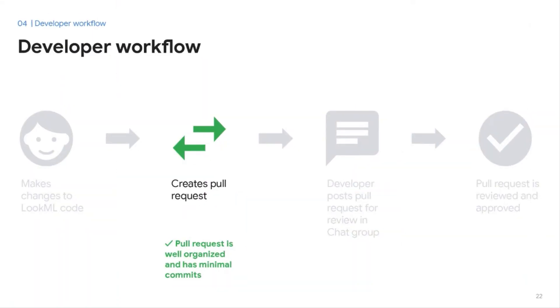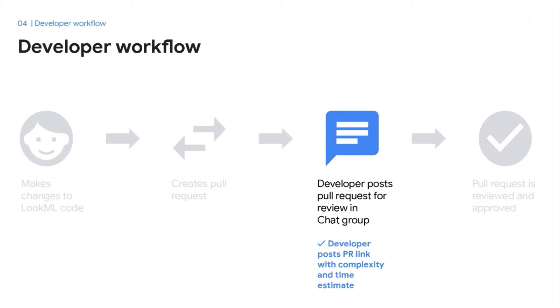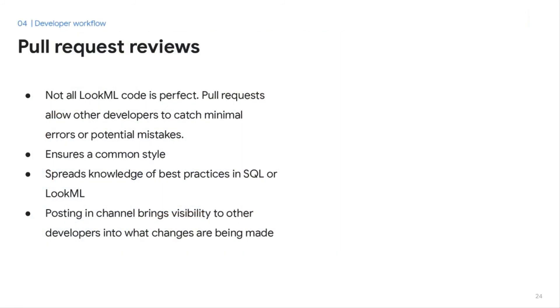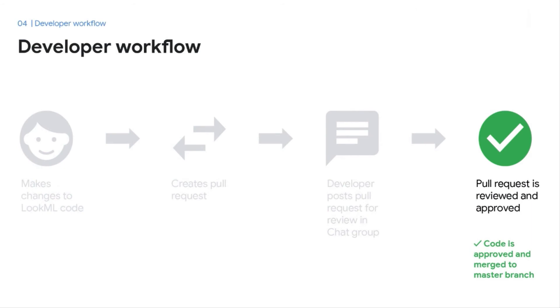Once the developer ensures that their code meets the developer guidelines, they can open a pull request using their Git provider. Once the pull request is created, the user can post a link with the pull request, the purpose, the complexity, and the time estimate for review so that other developers can review. We have a chat channel internally that includes all ambassadors and the centralized data team so that other users can help review each other's code. Pull requests give other users the opportunity to review each other's code and learn from one another. Not all LookML code is perfect, and another set of eyes helps catch minimal errors or potential mistakes. Having someone else review also ensures a common style and allows developers to spread knowledge of best practices in SQL or LookML. This also brings general awareness of what other developers might be working on. Once another developer approves a pull request, the code is then merged to the master branch.